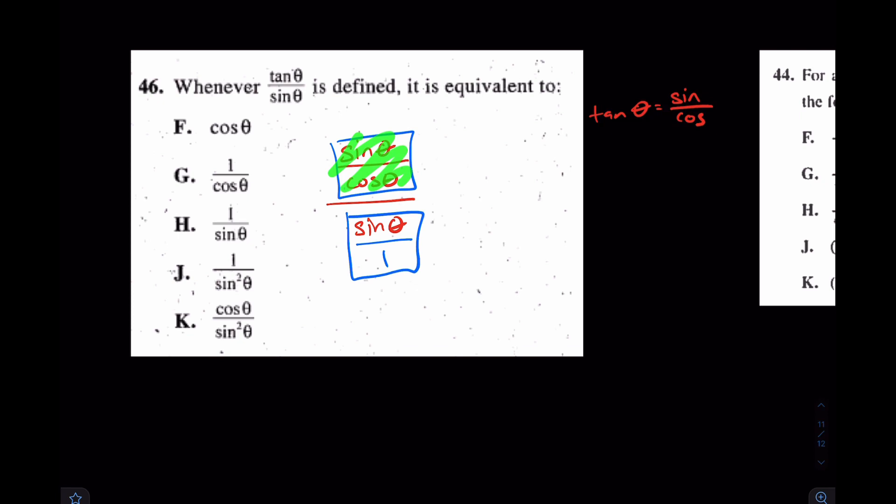We say keep, change, and then flip. Keep, change, flip, so that'll become sine theta over cosine theta times 1 over sine theta. And at that point, you can understand that this sine theta, this sine theta cancel. I'm left with just 1 over cosine of theta. The answer is g.